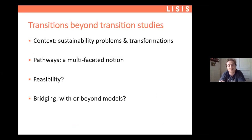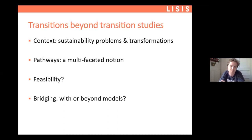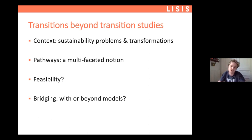This is going to be mostly the structure of the talk. I'm first going to introduce a context — why the interaction of sustainability problems and transformations, and the challenges about modeling the future, thinking in terms of trajectories and pathways. This leads me to introduce the notion of pathways, which is really central to transition studies. Then the question of feasibility — which I put in question mark because it's contested and plural — and lastly some more operational issues about interacting with different approaches including modeling.